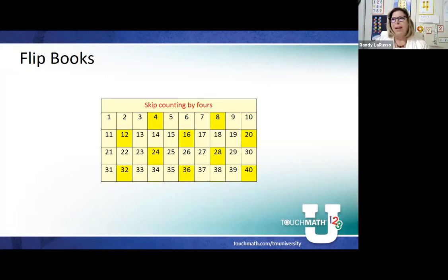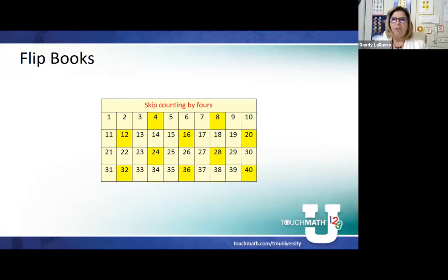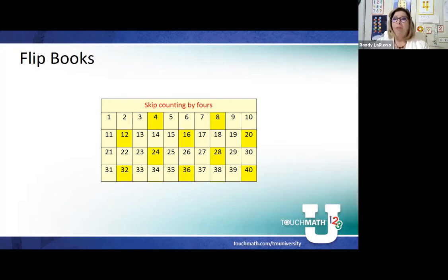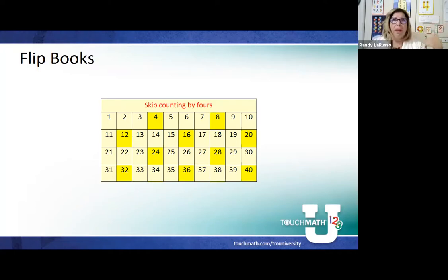I want to break the hundreds chart down into maybe flip books. I might start by having my students do their 2s and then their 3s. This is an example of what a flip chart book might look like in 4s. I'm going to have my numbers from 1 to 40. My 2s go to 10, my 3s go to 30, my 4s to 40, with a different page for each book as I work through them.